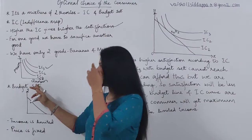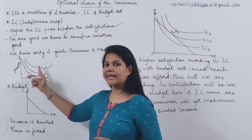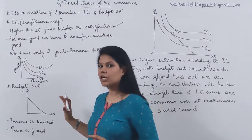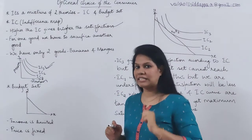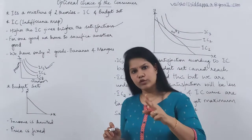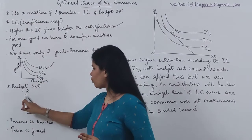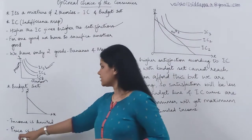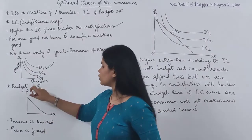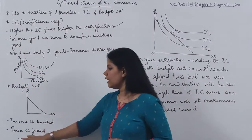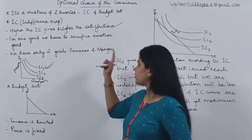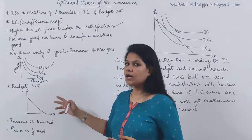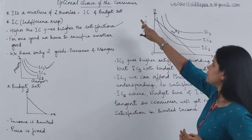When you are going to buy these goods, we will get three different indifference curves. As I said, IC3 gives you the highest satisfaction. Now, what does the budget set say? We have two goods again — banana on the x-axis and mango on the y-axis. The consumer's income is limited, and the prices of the two goods — banana and mango — are fixed. These are the two different theories which we are going to study simultaneously in the theory of optimal choice of the consumer.